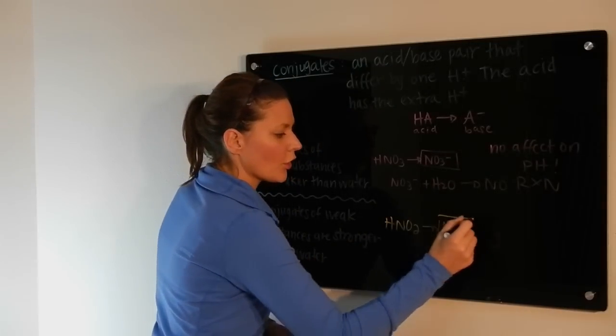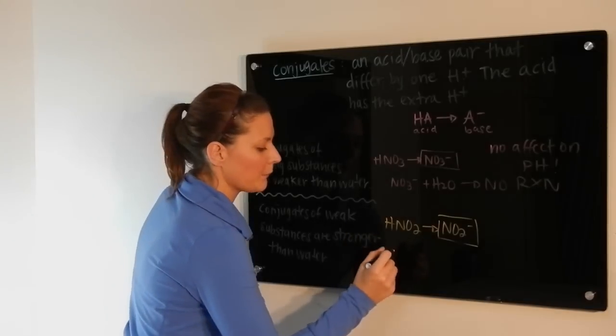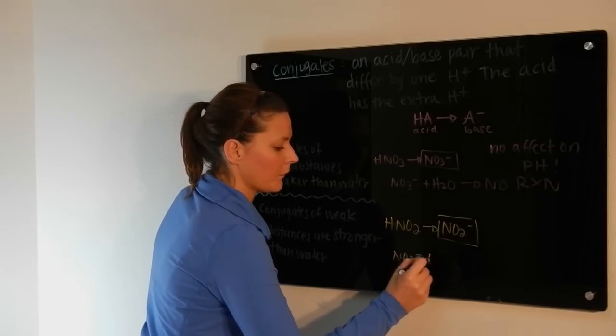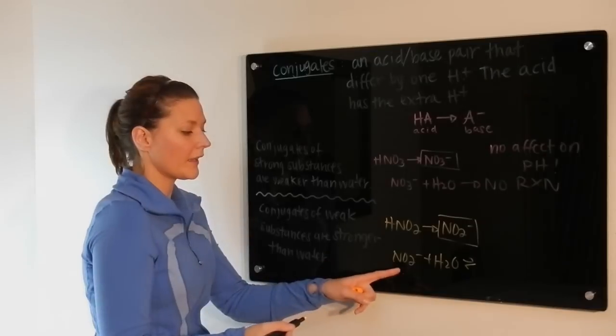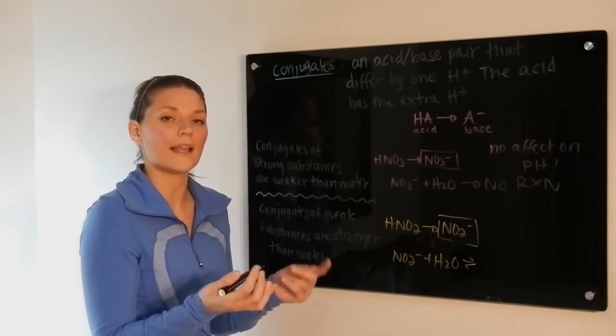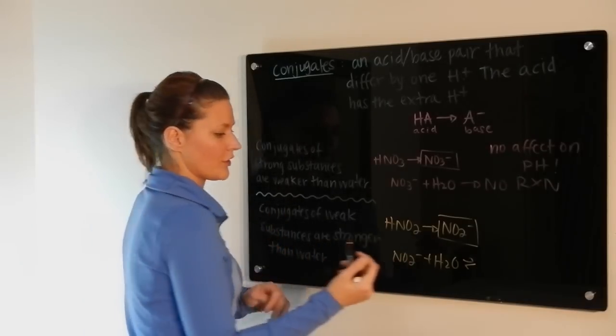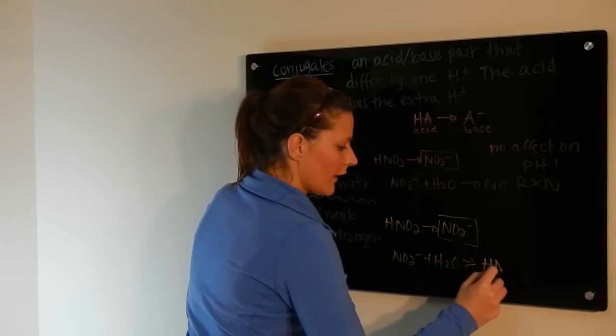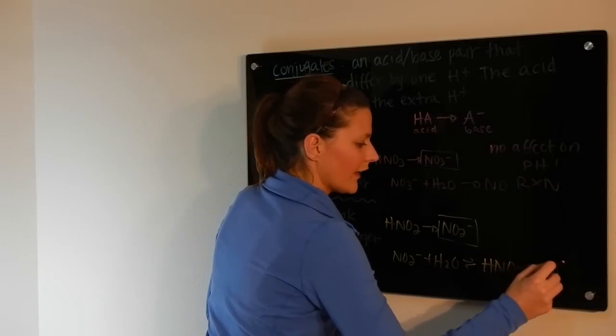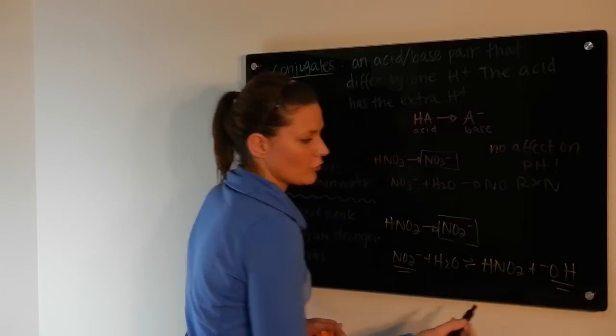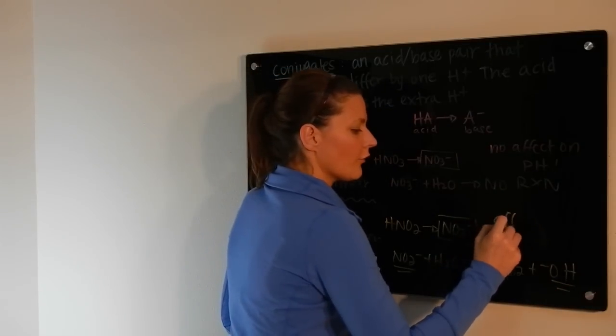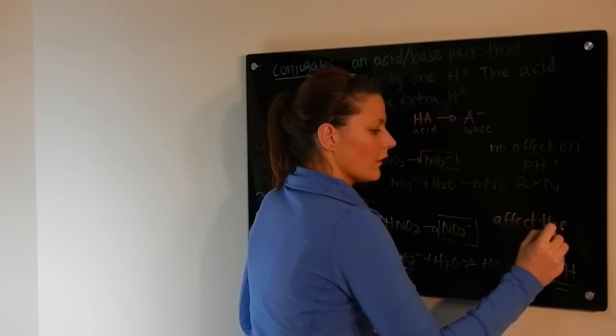This now, if you took this and only this and placed it in water, there would in fact be an equilibrium reaction. Because this is stronger than water, it is able to rip off some of the hydrogens. So you would form HNO2 and hydroxide. This substance is able to form hydroxide, so it would affect the pH.